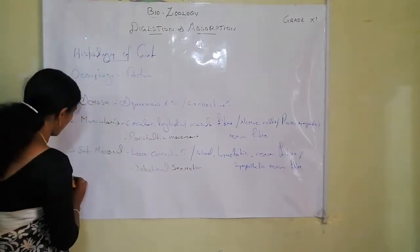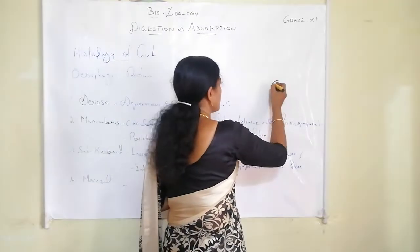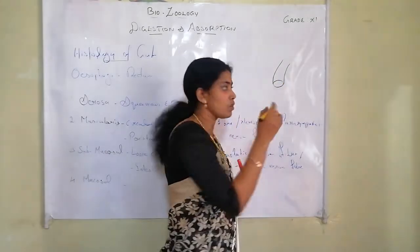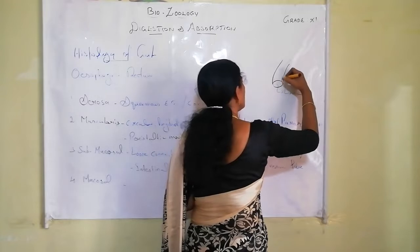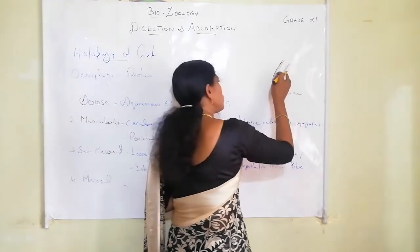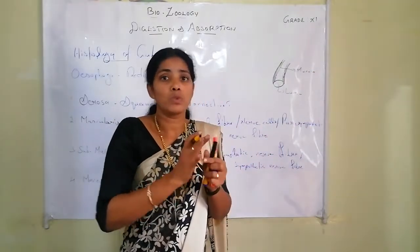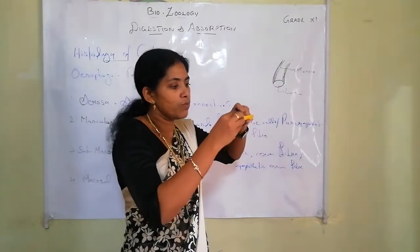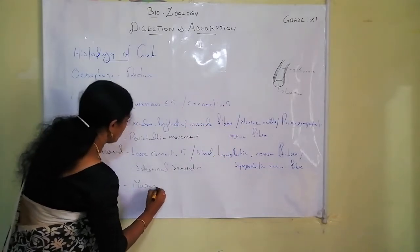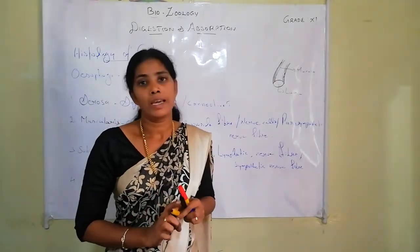The innermost layer is called the mucosal layer. This layer lines the lumen — the cavity inside the intestine. The mucosal layer secretes mucus. So these are the four layers present in the wall of the gut: serosa, muscularis, submucosa, and mucosa.